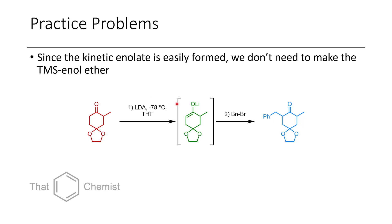You might be wondering from the previous lecture why we don't have to make a TMS enol ether. Well, in this case, because this is a rigid system, if we form an enolate, we can only form the E enolate because the Z enolate can't be formed via rotation. For an alkylation reaction like this, it may not matter whether or not you use the E or Z enolate, because we're not adding a chiral nucleophile, so there should only be addition to one side regardless.